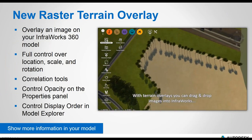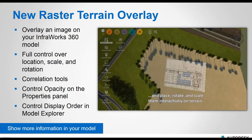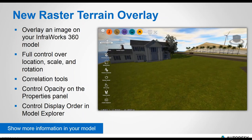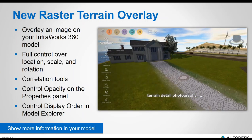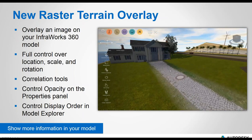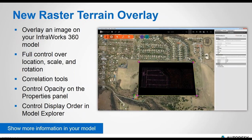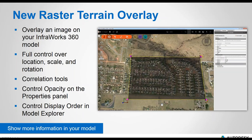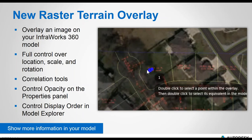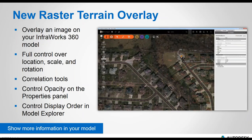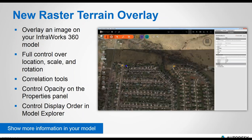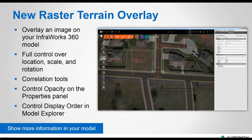An exciting new addition to the software is raster terrain overlays. This allows you to overlay many different image formats into your model, giving you full control over location, scale, and rotation. As well as plans and technical data, you can pull in images to enhance your models visually. The correlation tools are a powerful way to get your images aligned into the model, using a three-pick process to warp the image into best-fit alignment.